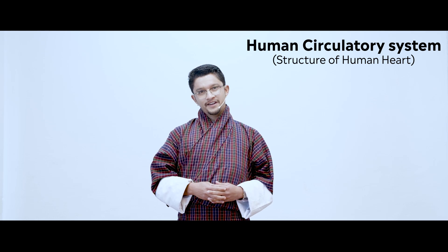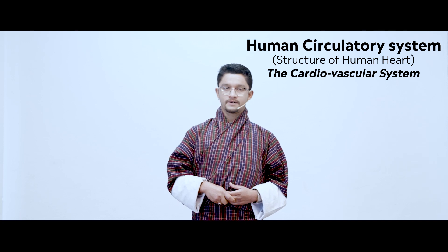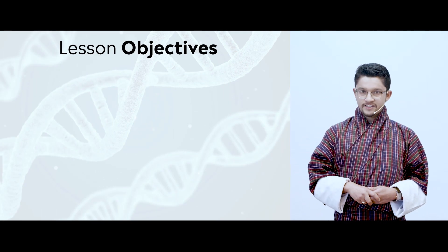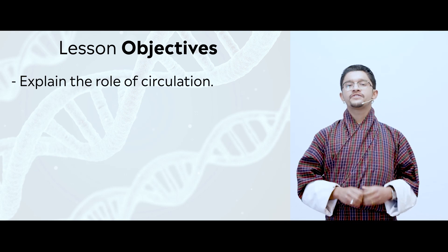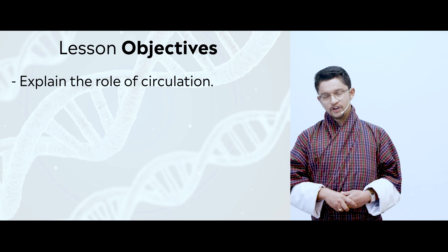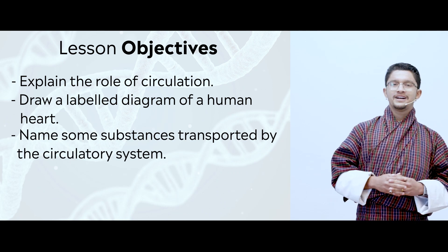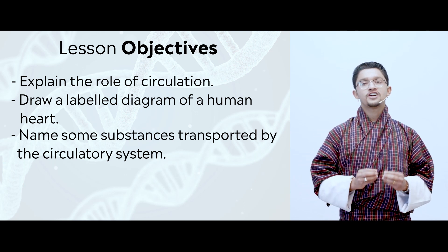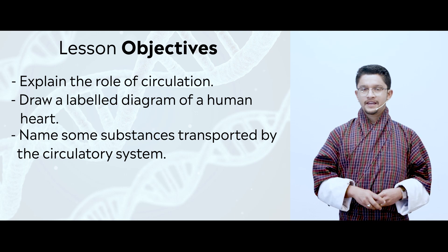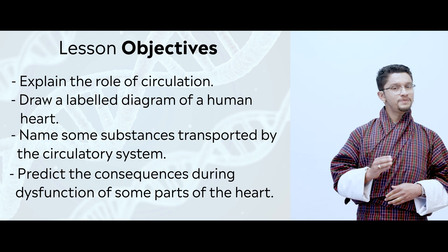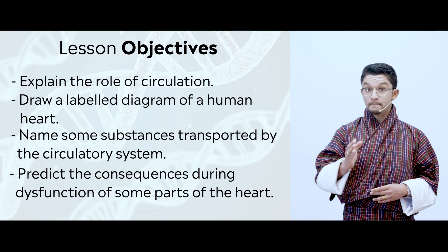In this lesson, we are going to talk about our transport system — the human circulatory system, also called the cardiovascular system. Let us look at the objectives. Towards the end of the lesson, you should be able to explain the role of circulation in our body, draw a labelled diagram of the human heart, name and list some substances transported by our transport system, and predict what will happen if some parts of the heart do not function.